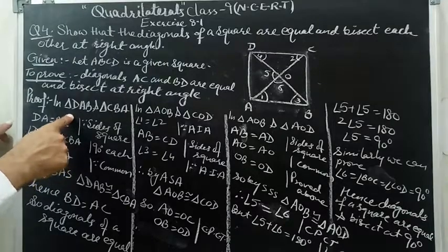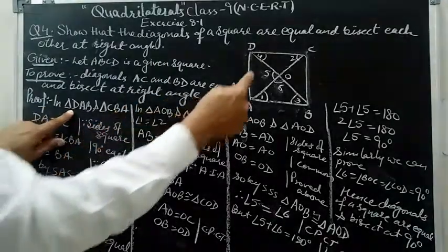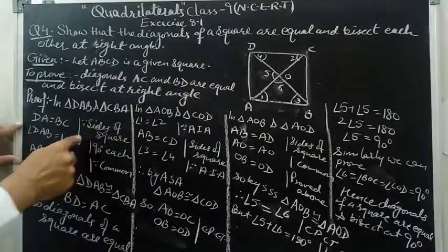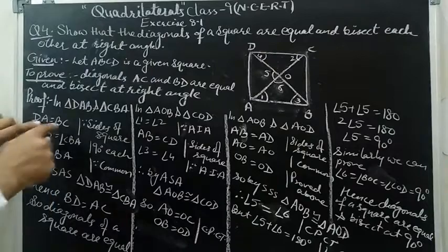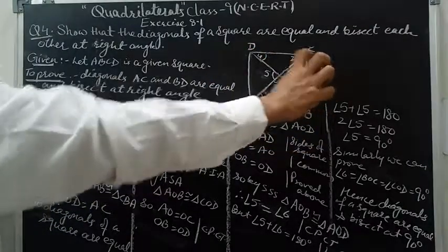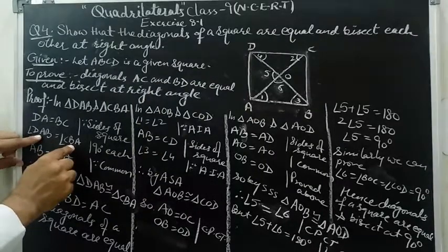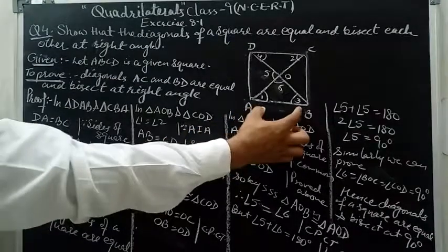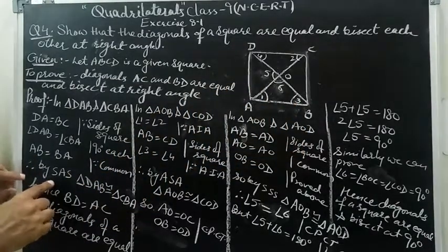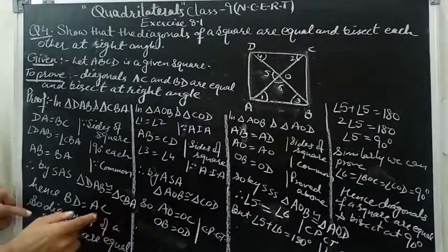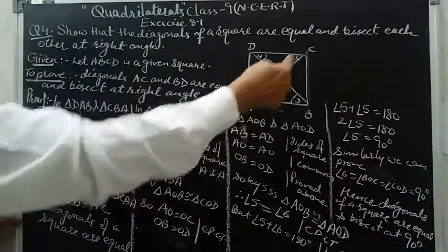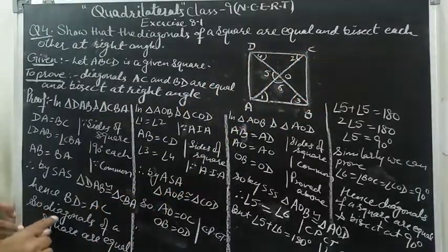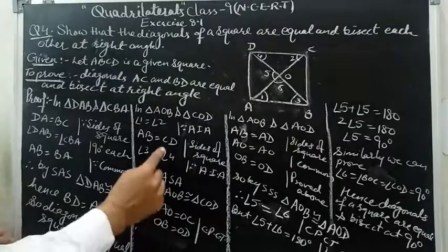Writing the solution: for Part 1, in triangles DAB and CBA — DA equals BC as sides of the square are equal; angle DAB equals angle CBA as both are 90 degrees; AB equals BA as the common side. By SAS, triangles DAB and CBA are congruent. Hence diagonal AC equals diagonal BD by CPCT. Diagonals of the square are equal.